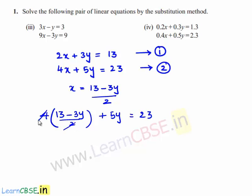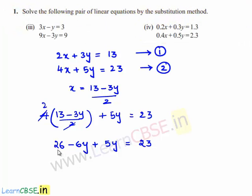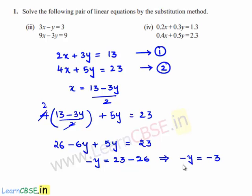2 goes into 4 as 2. So 2 times 13 is 26, and 2 times minus 3y is minus 6y, and plus 5y is equal to 23. Now let us transpose 26 to the right-hand side. We get minus 6y plus 5y is equal to 23 minus 26. This implies minus y is equal to minus 3, so the negatives cancel and y is equal to 3.